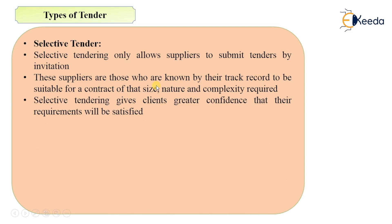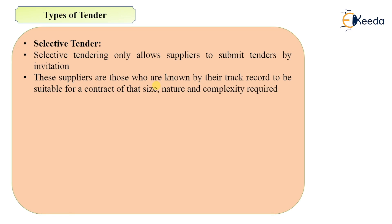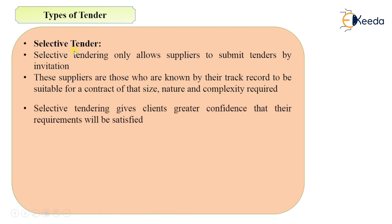There is some work that cannot be offered to a common contractor — it may require special skills, past experience, or the contract may be too large or complex for small or new contractors. In such cases, only selected contractors are invited to submit tenders for that particular work, and this is called selective tender.